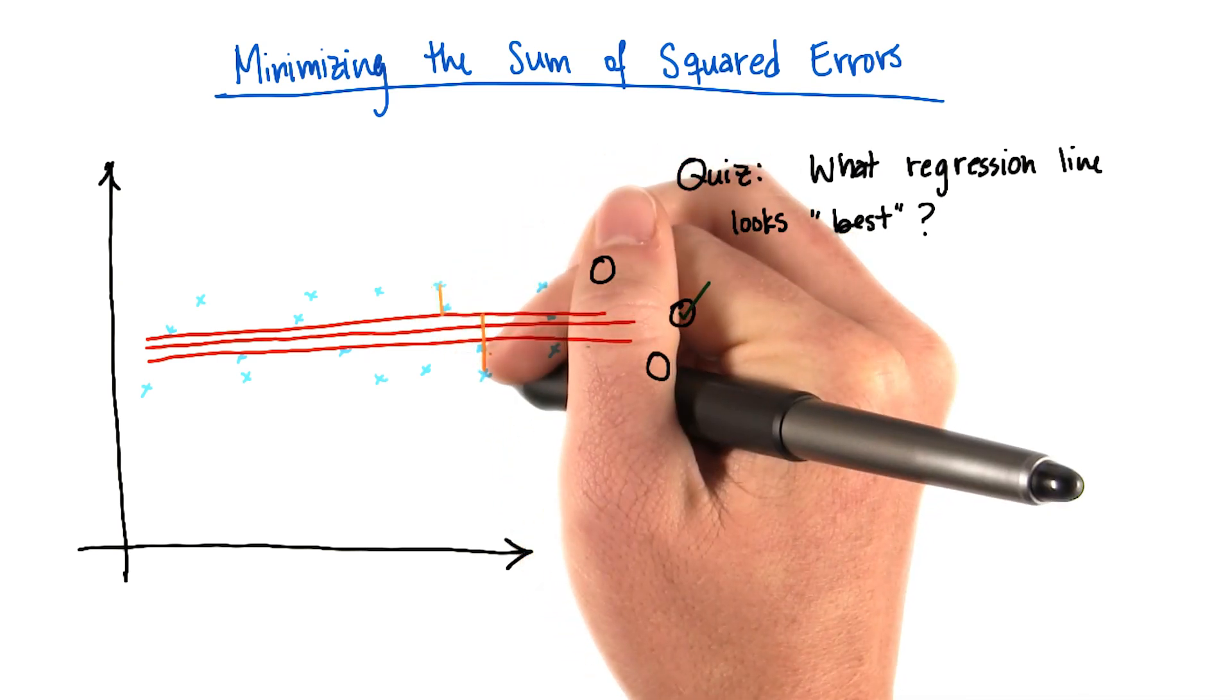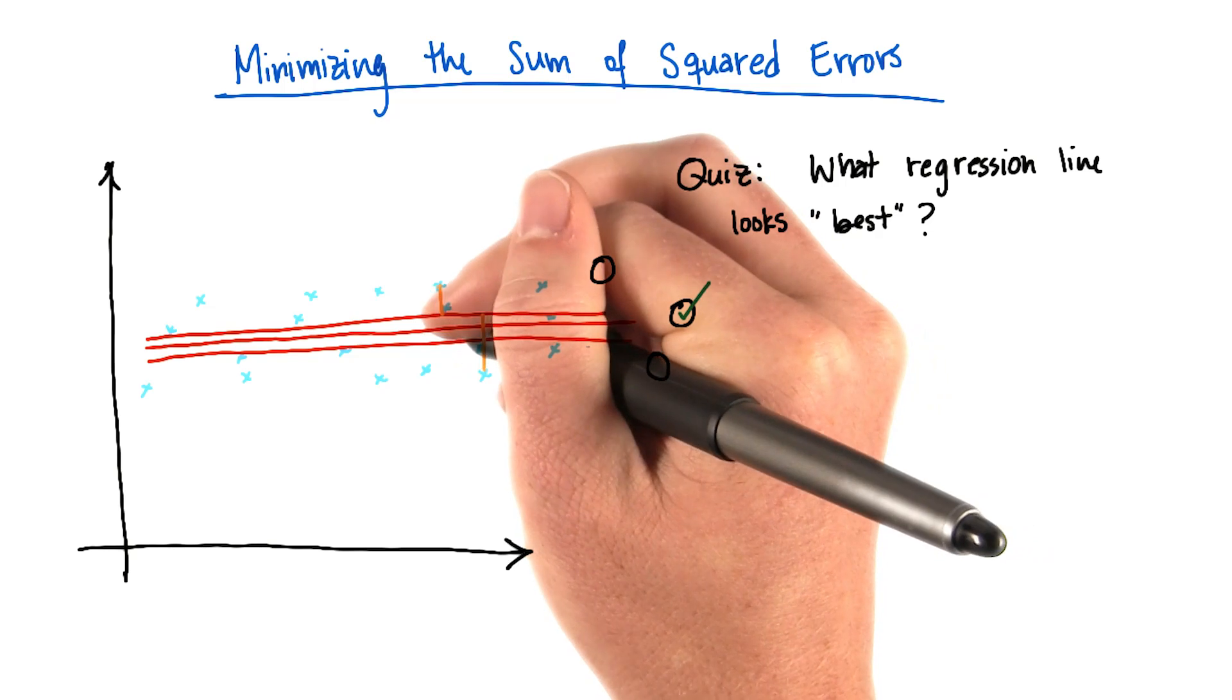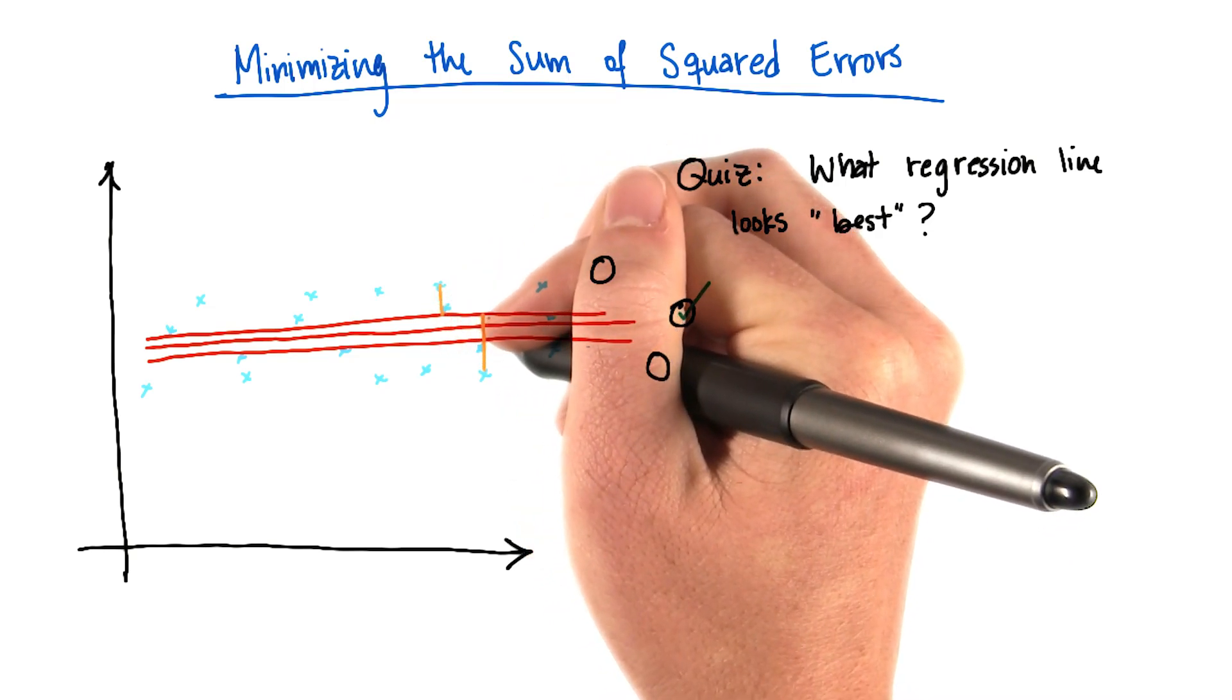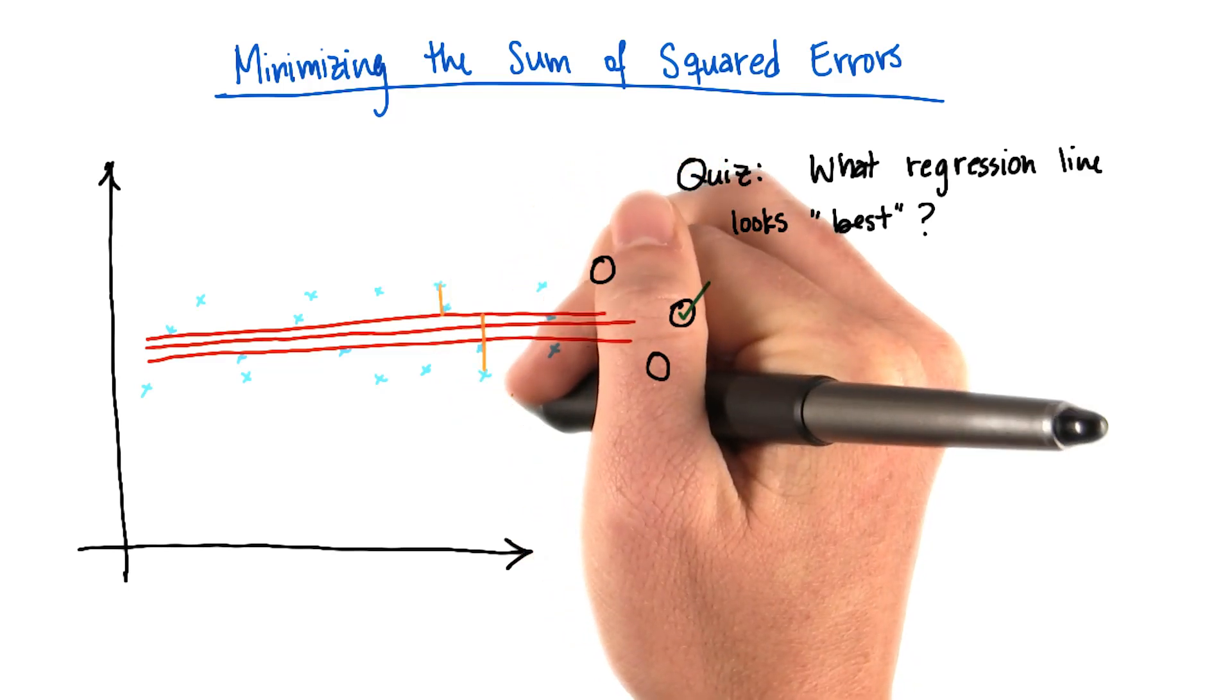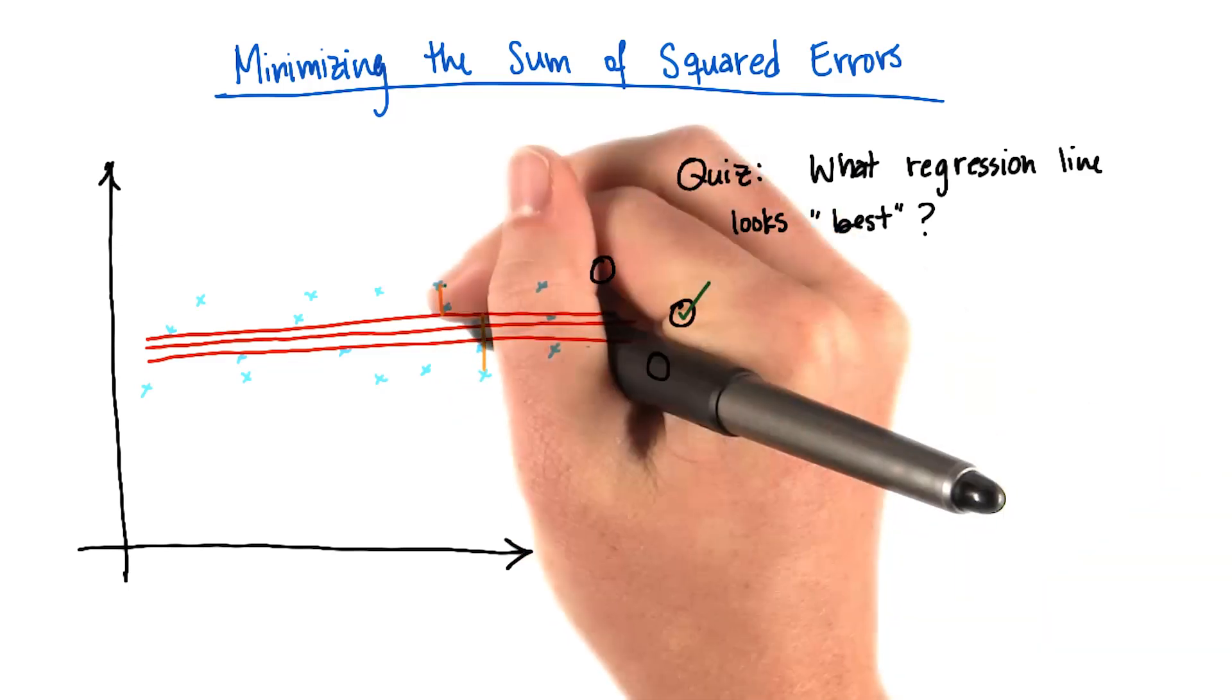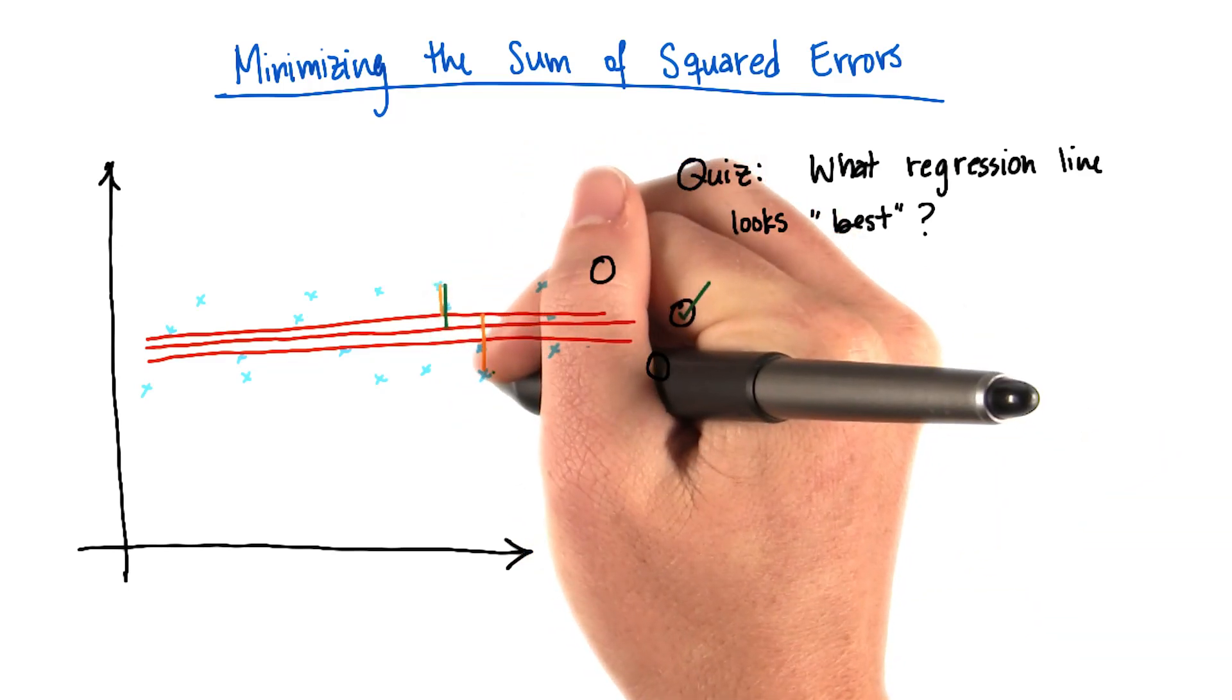So taking these two points as concrete examples, it would be a little bit closer to the top point, a little bit farther away to the bottom point. But overall the total error for these two example points would be exactly the same as the total error for these two points to the middle line.